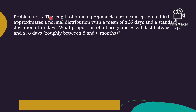Problem number three: The length of human pregnancy from conception to birth approximates a normal distribution with a mean of 266 days and a standard deviation of 16 days. What proportion of pregnancies will last between 240 and 270 days, roughly 8 to 9 months? Note: a pregnancy below 7 months is premature, and above 9 months is not good. The probability mean μ = 266 and standard deviation σ = 16.